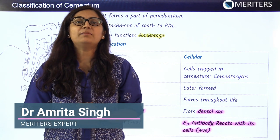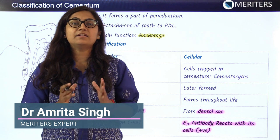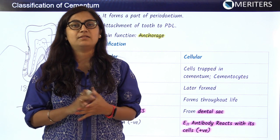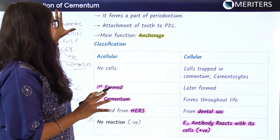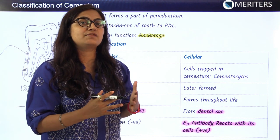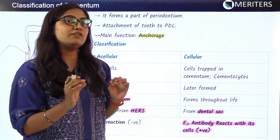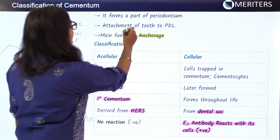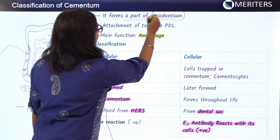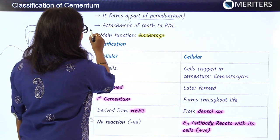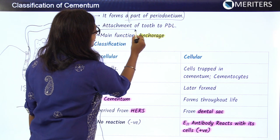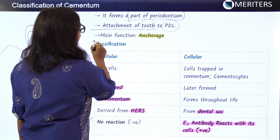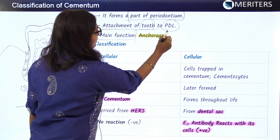We will be discussing another important part of the tooth structure, that is cementum. We are covering the classification of cementum, but first a brief introduction. Cementum forms a part of the periodontium, and its main function is anchorage — it provides attachment of the tooth to the periodontal ligament.